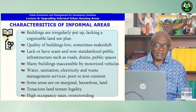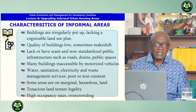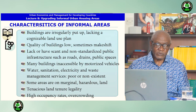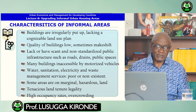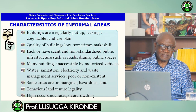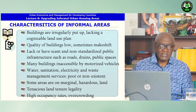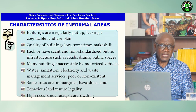Characteristics of informal areas: buildings are irregularly put up, lacking a cognizable land use plan. The quality of buildings is low, sometimes makeshift. They lack or have scant and non-standardized public infrastructure such as roads, drains, and public spaces. Many buildings are inaccessible by motorized vehicles. Water, sanitation, electricity, and waste management services are either poor or non-existent, and some areas are on marginal or hazardous land. They have a tenuous land tenure status, and you have high occupancy rates and overcrowding.